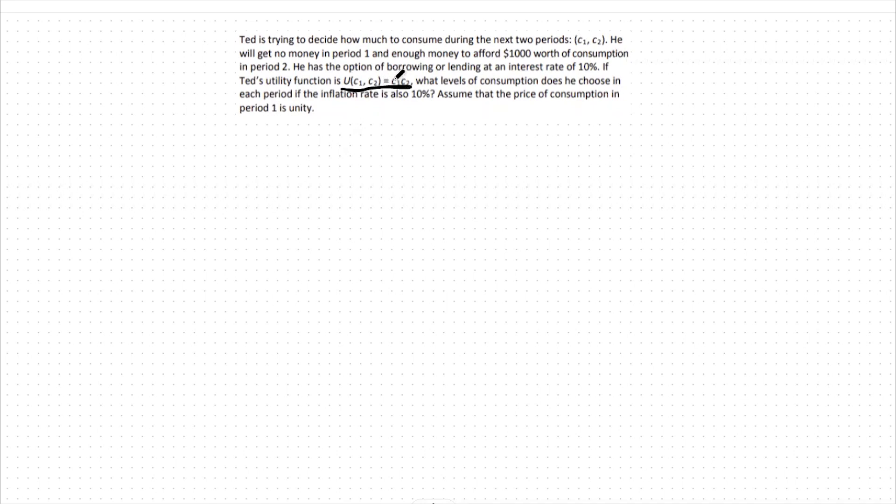In this case, the only difference is that we're plugging in new variables. Instead of good x1 and good x2, we look at good c1 and good c2. c1 would be the amount of consumption I consume today, versus c2, the amount of consumption I consume a year from today, for instance.